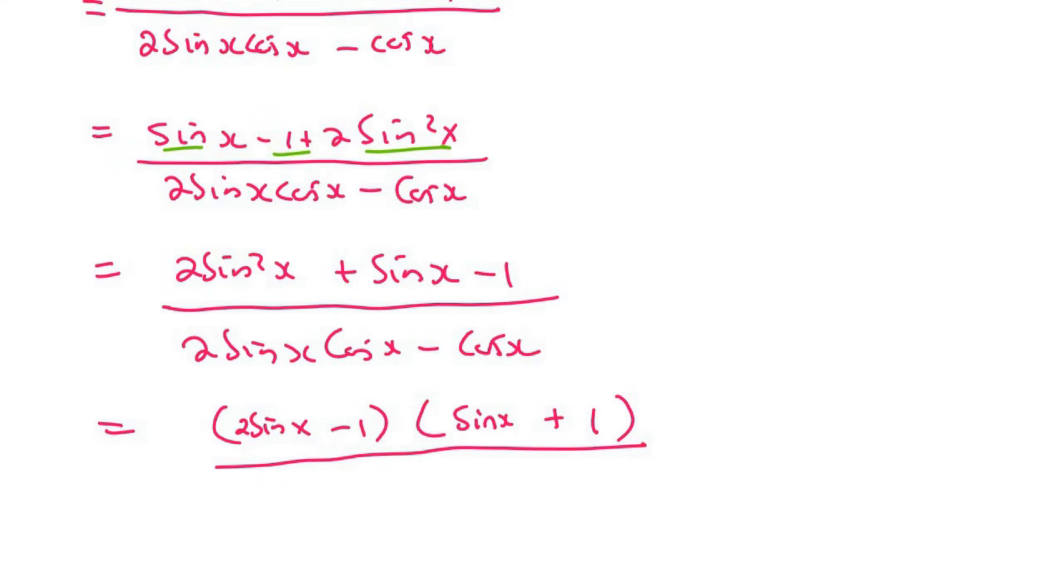At the bottom there is a common factor because if you look at these two terms, there's a common factor of cosx. And then you would be left with 2sinx minus 1. And now what's really nice is that this cancels with this one.